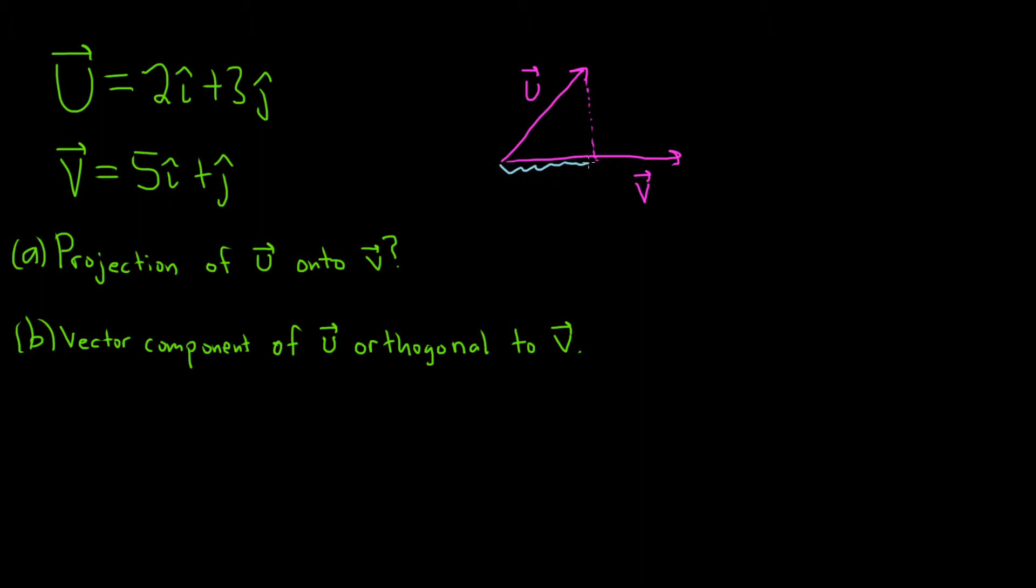You get another vector here, this blue vector. This blue vector, I'll call it w1. That's the projection of u onto v.